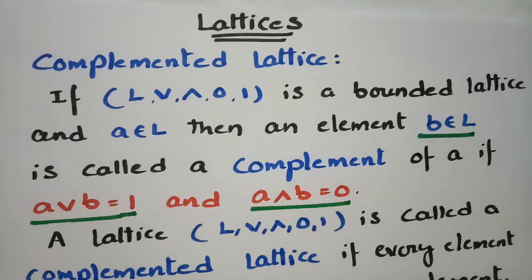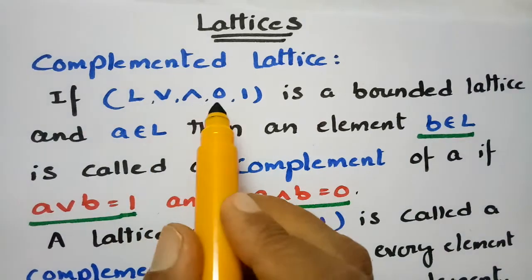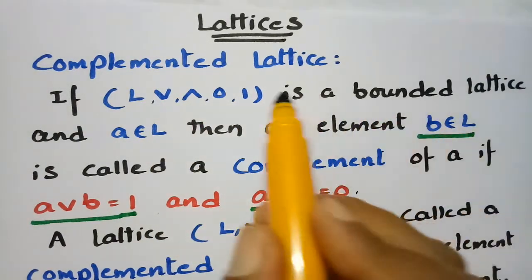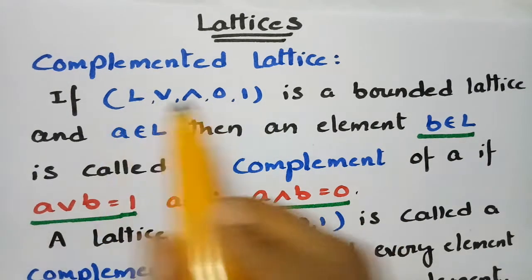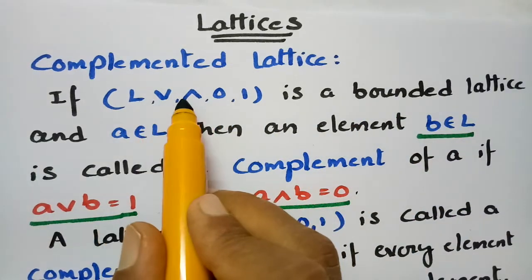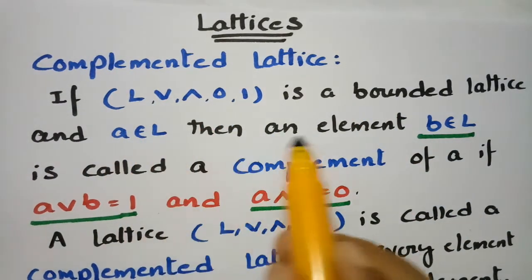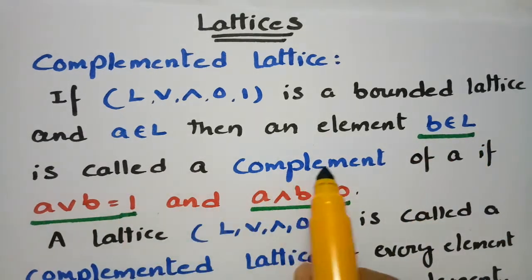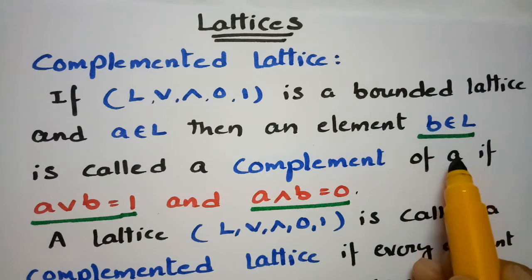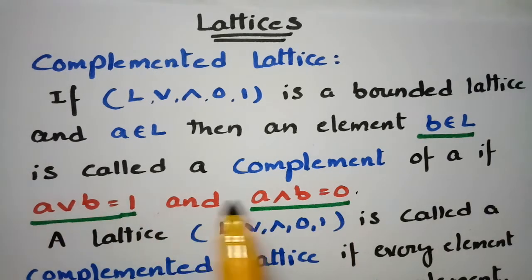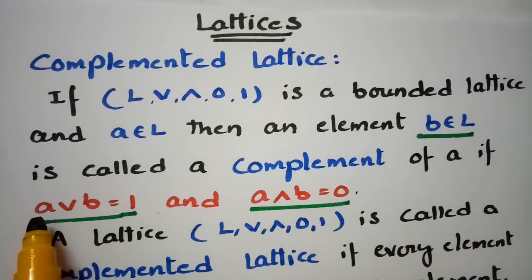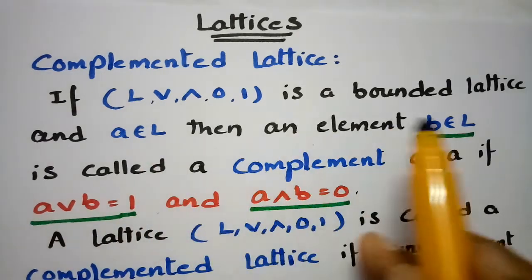This video is on complemented lattice, a topic related to discrete mathematics. Let L (join, meet, 0, 1) be a bounded lattice, where 0 is the least element and 1 is the greatest element. An element B belonging to L is called the complement of A if A join B equals 1 and A meet B equals 0.